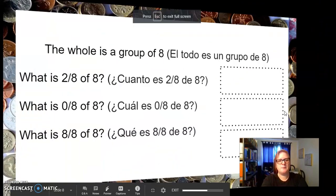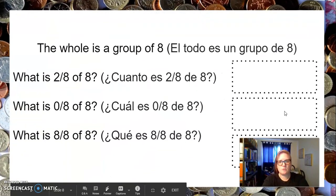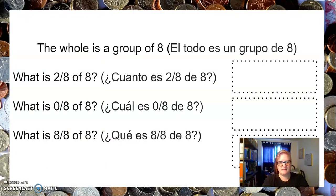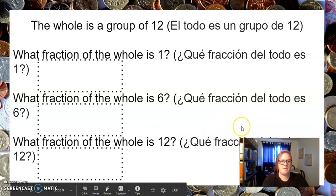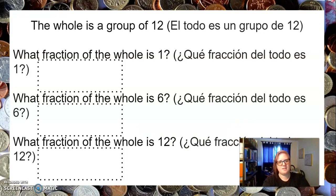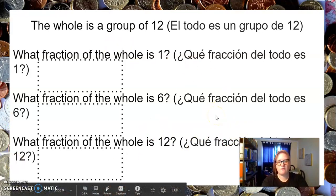The next slide is very similar. The whole is a group of eight. What is two-eighths of eight? What is zero-eighths of eight? What is eight-eighths of eight? Now this one's a little bit different — this time, you are writing a fraction. The whole is a group of twelve. What fraction of the whole is one? That would be one out of twelve, and you would write that as a fraction. What fraction of the whole is six? What fraction of the whole is twelve? All three of these answers should be fractions.